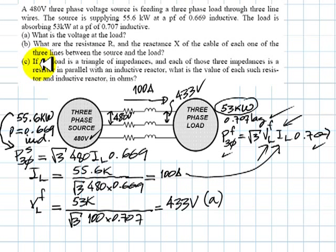Now let's work on part C. Observe I'm jumping from part A to part C, because it's simpler than part B. If the load is a triangle of impedances, and each one of those three impedances is a resistor in parallel with an inductive reactor, what is the value of such resistor and such inductive reactor in ohms? Before proceeding, let me erase all of this.